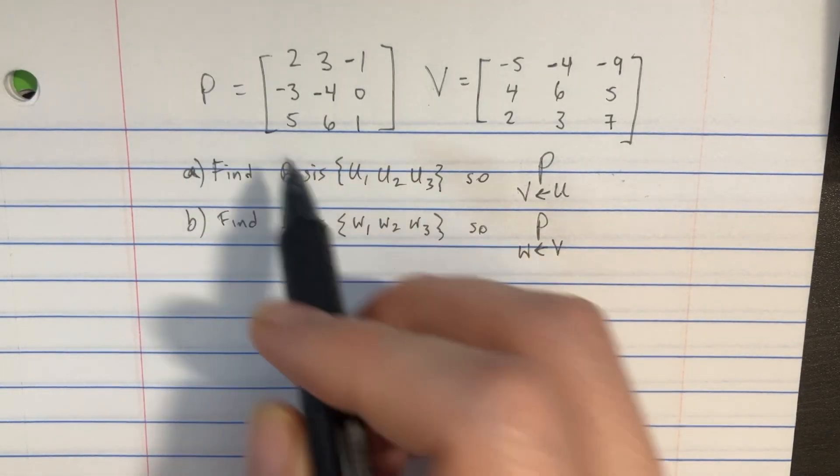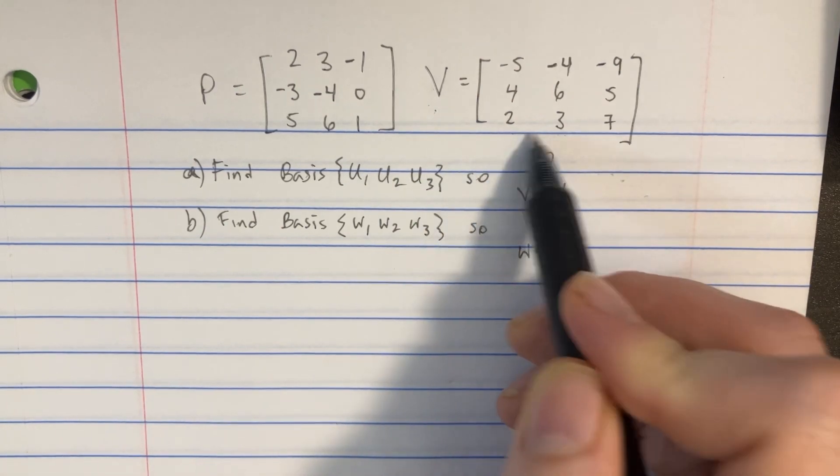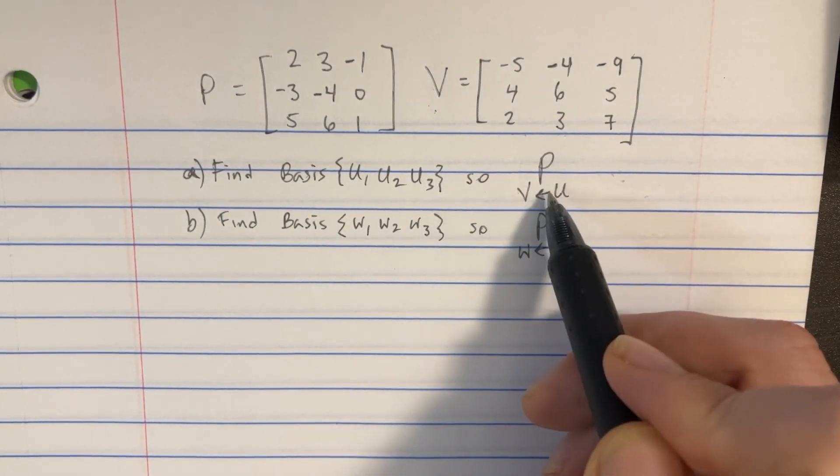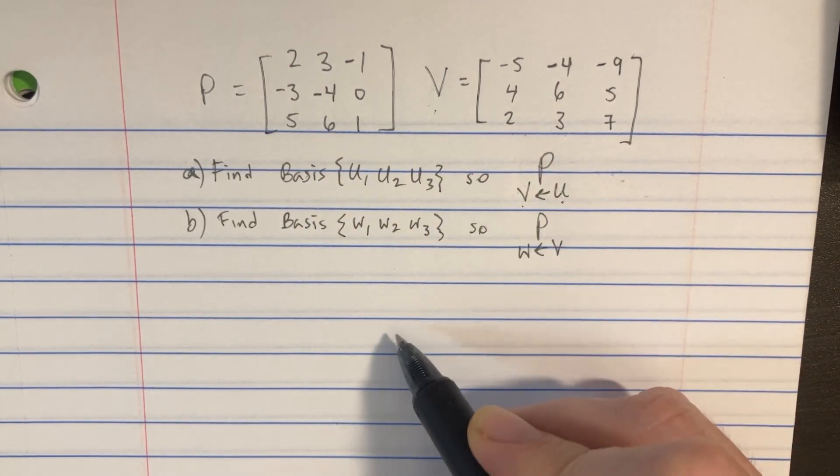We're given a matrix P here, and then some V vectors, which I've put into a V matrix, and we're asked to find a basis U.